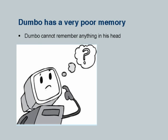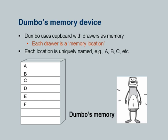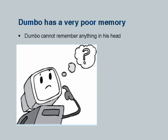Then we say that Dumbo has a very poor memory — he cannot remember anything in his head, and therefore he needs some mechanism to store values. Dumbo uses a cupboard with drawers as memory, and each drawer is like a memory location, implicitly introducing the notion of a memory location. Each location is uniquely named such as A, B, C, etc., and we show a set of drawers where names are given — this is Dumbo's memory.